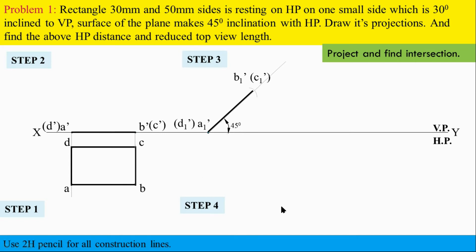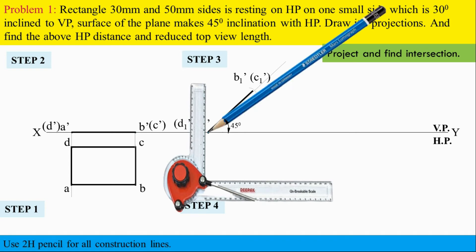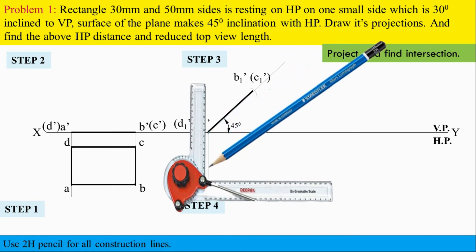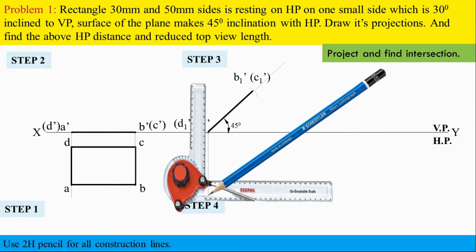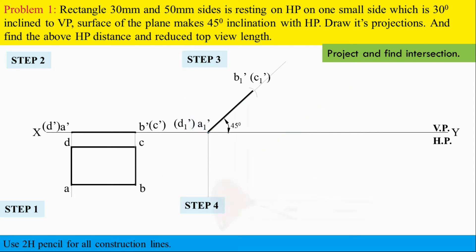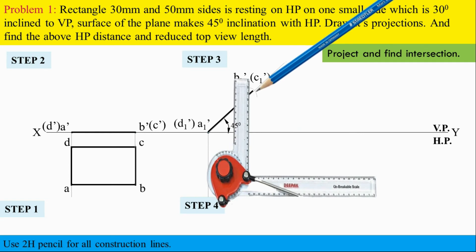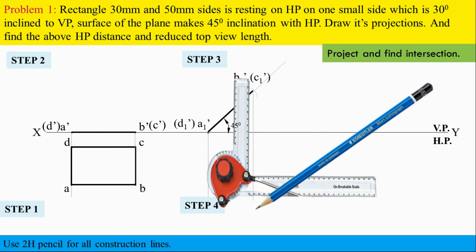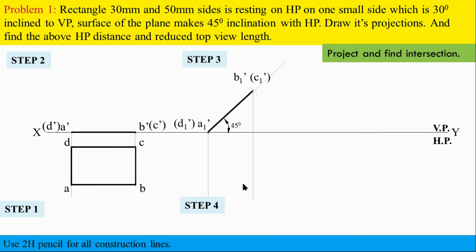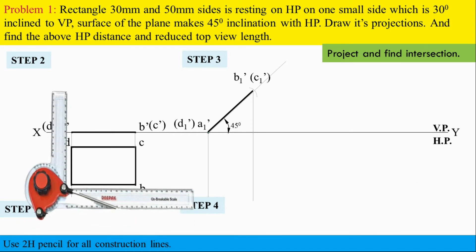In step four, draw projection lines from step three up to the top view — from the VP to HP. Take a 2H pencil and drafter. From every point in step three, draw projection lines. From a1-dash and d1-dash draw projection lines, and similarly from b1-dash and c1-dash. Extend the projector lines up to a certain length. Similarly, draw horizontal projections from step one.